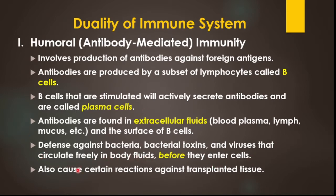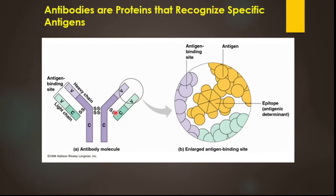Antibodies also cause certain reactions against transplanted tissues. Humoral immunity is immunity provided by B-cells. B-cells recognize the antigen and produce antibodies against that foreign antigen. When B-cells secrete antibodies from their surface, we start to call them plasma cells.